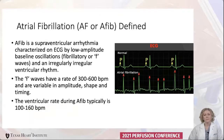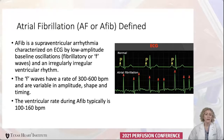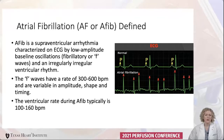AFib, or atrial fibrillation, is a supraventricular arrhythmia with chaotic rapid contraction of the atrium. On the EKG shown here on the top, normal rhythm shows that for every QRS complex, it's preceded by a P wave at regular intervals. Below is a patient in AFib that has low-amplitude baseline oscillations and fibrillatory, or F waves, with an irregularly irregular ventricular rhythm. The F waves can have a rate of 300 to 600 beats per minute, and the ventricular rate during AFib is typically 100 to 160 beats per minute.